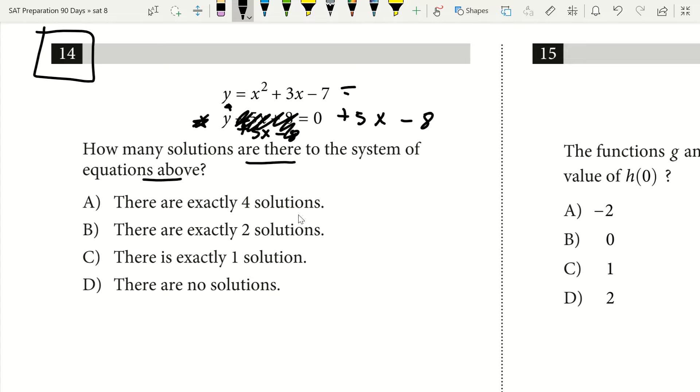So I can go ahead and plug that in up top: 5x minus 8. At this point, I'm going to add 8 to each side because I want to set it equal to 0, and I'll subtract 5x from each side as well. So 3x minus 5x will give me negative 2x. I'm left with x squared minus 2x, and then negative 7 plus 8 will leave me with plus 1, so that equals y.